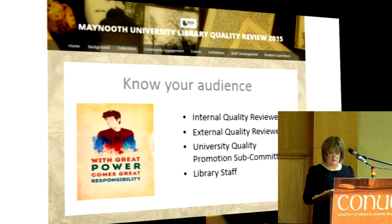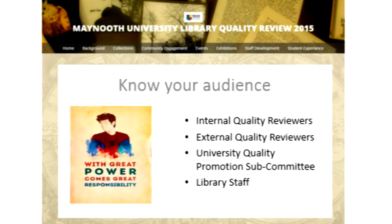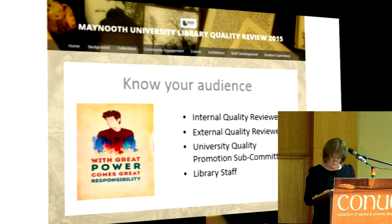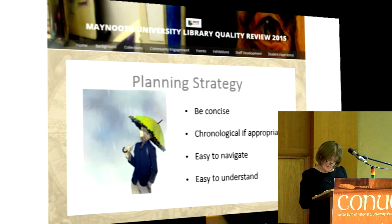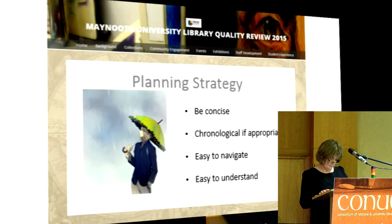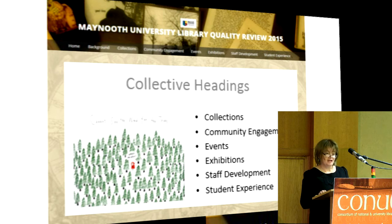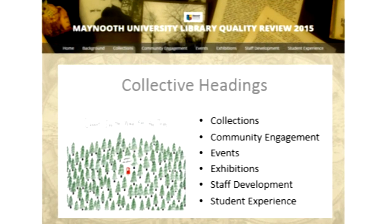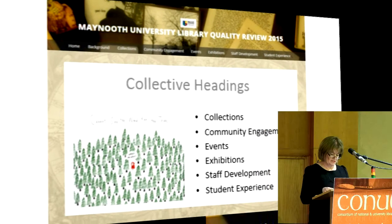We had the advantage of knowing our audience, and the knowledge that not all of our audience were familiar with the library. We had a vast amount of work to display and needed to be selective, as we couldn't feature everything for the review period, which was 2010 to 2015. The information had to be as concise as possible and chronological where necessary — for example, when showcasing the various exhibitions and events held in the library. Most of all, the blog had to be easy to understand and to navigate. In traditional library style, we broke each area we wanted to highlight into different subject headings: collections, community engagement, events, exhibitions, staff development, and student experience.